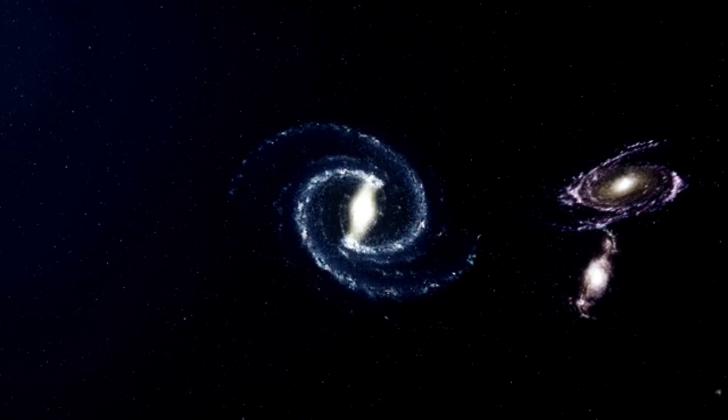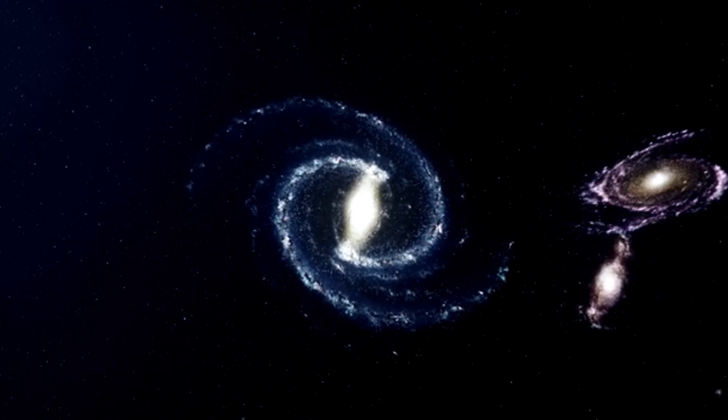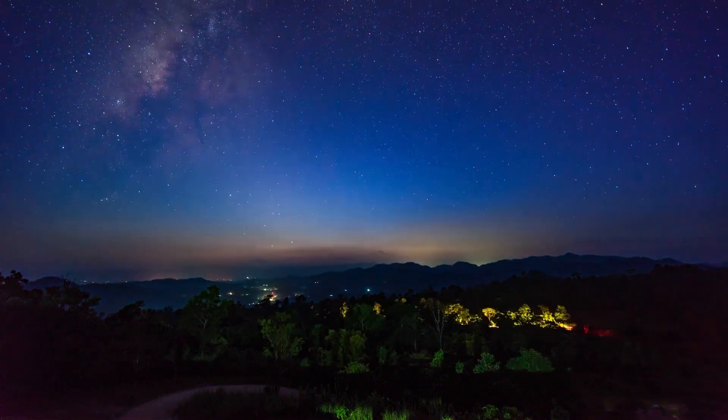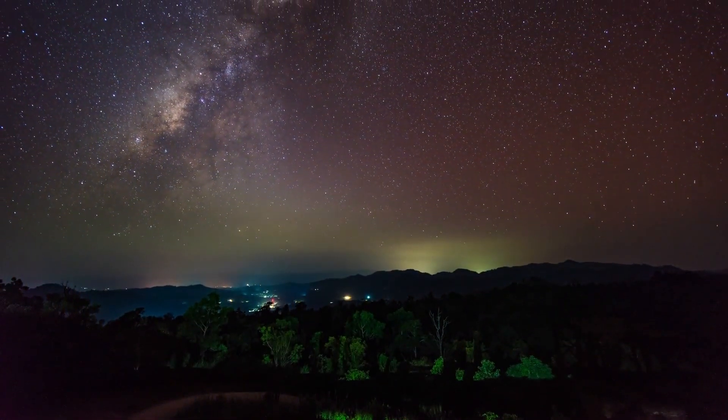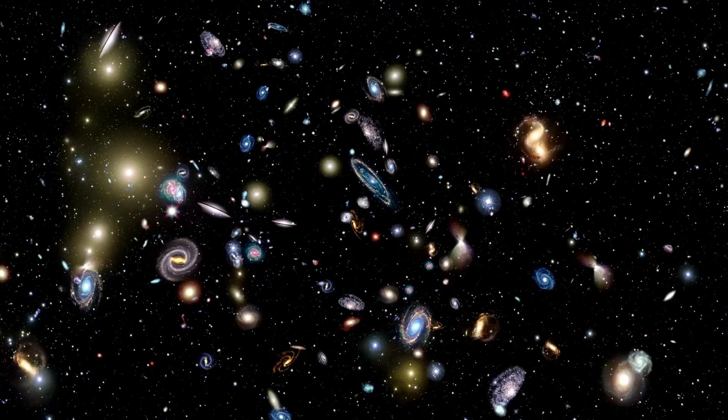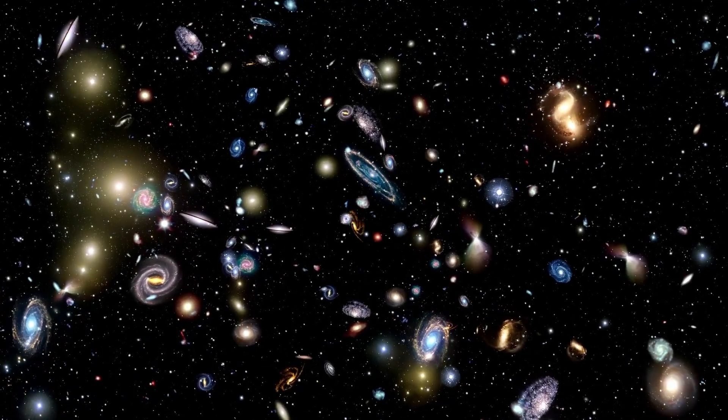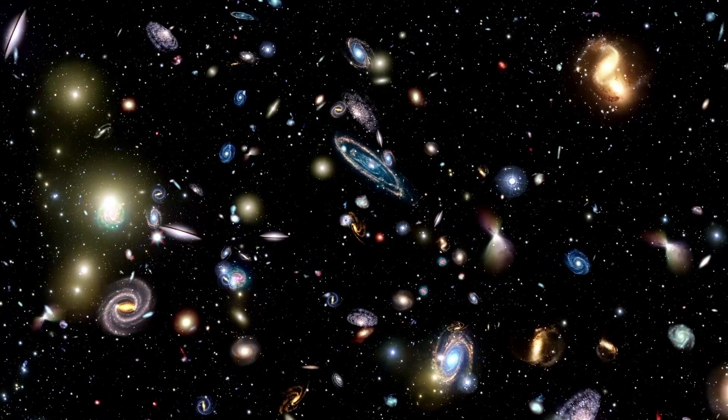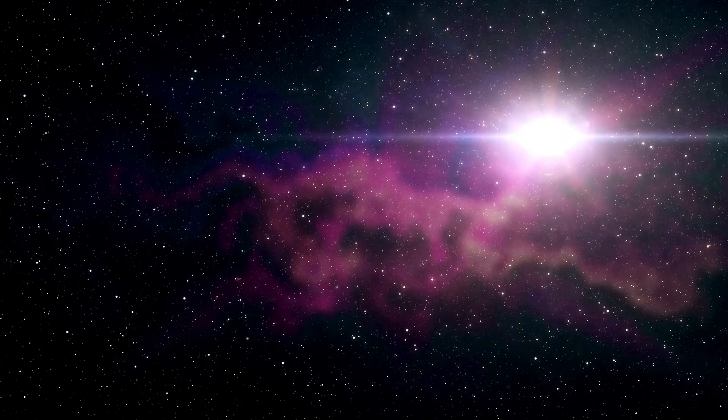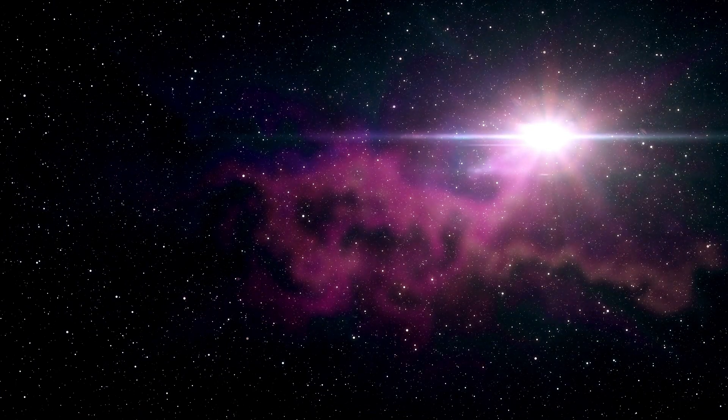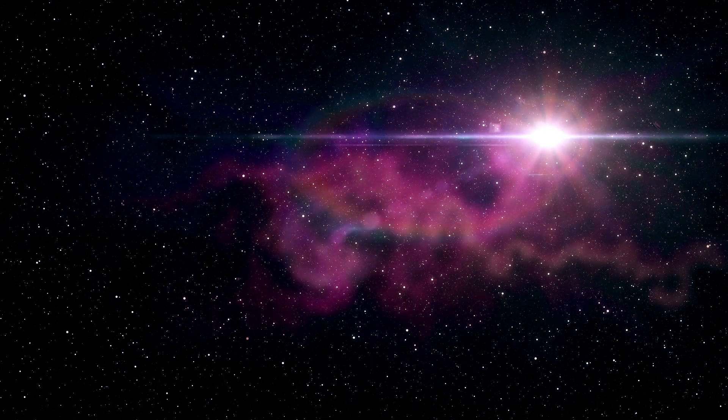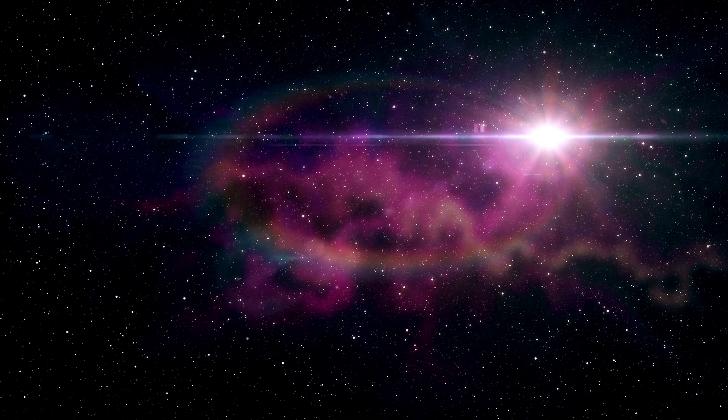You might be curious about why we can't observe the entirety of the cosmos. There are several reasons for this limitation. Despite light being the fastest object in the universe, it still takes time to travel through space. Consequently, when we observe distant objects, we are essentially peering into the past. The farther an object is, the longer its light has traveled to reach us, creating a sort of cosmic time machine that unravels the history of our universe as we witness galaxies millions, if not billions of light years away.